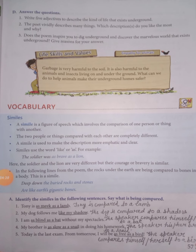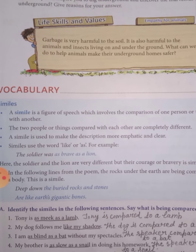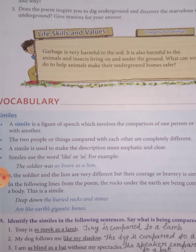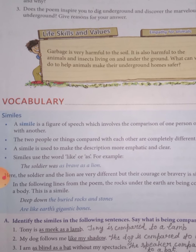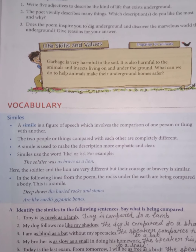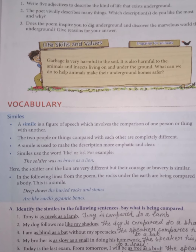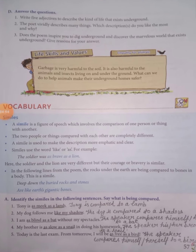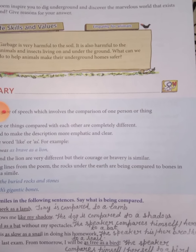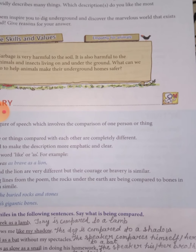Now for the exercise: identify the similes in the following sentences and say what is being compared. First: 'Tony is as meek as a lamb' — Tony is being compared to a lamb. Second: 'My dog follows me like my shadow' — the dog is compared to a shadow.